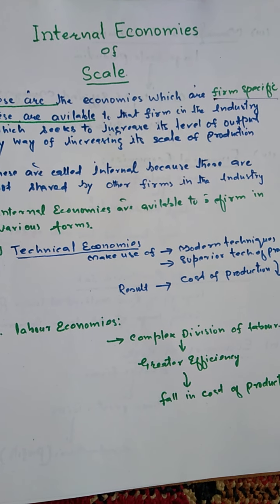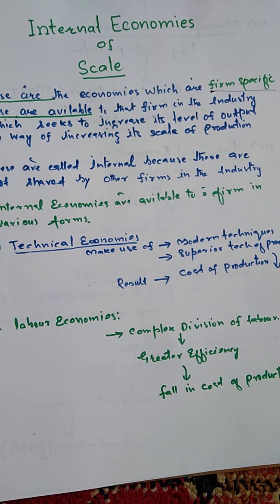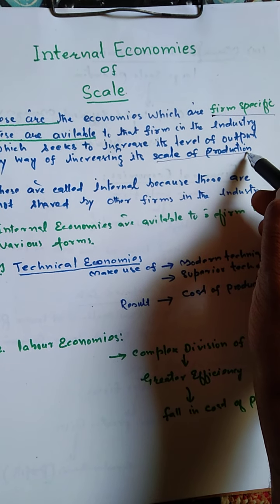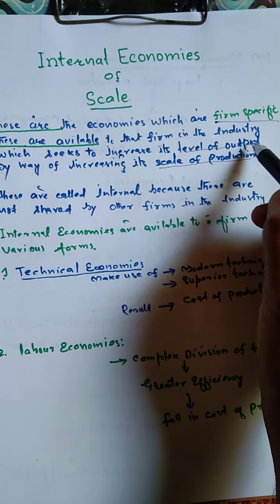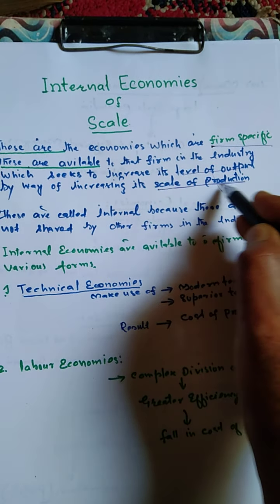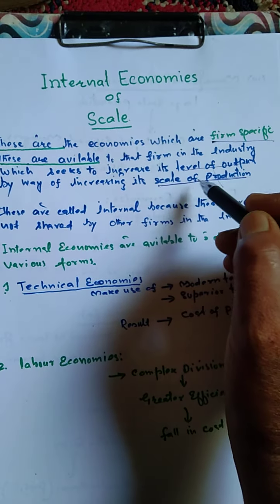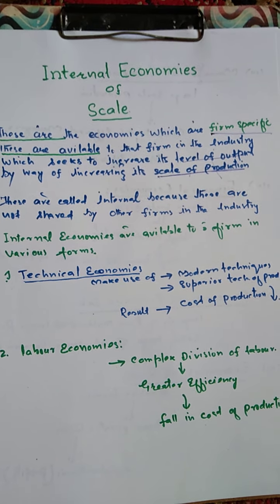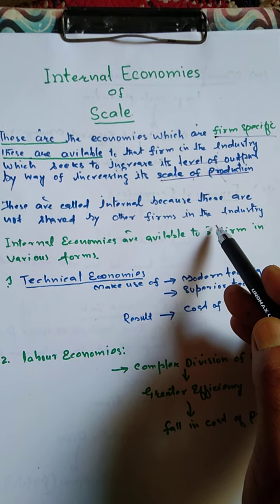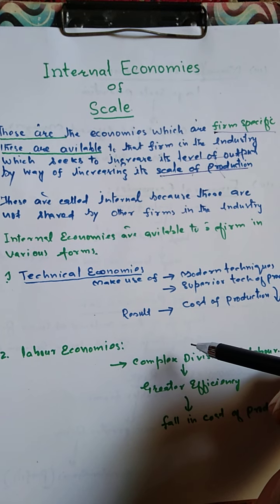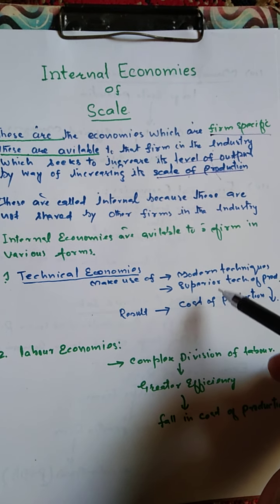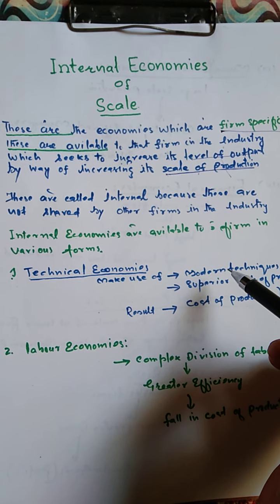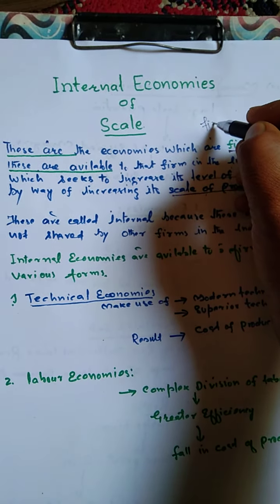These are available to that particular firm in the industry which seeks to increase its level of output by way of increasing its scale of production. Jab firm scale increase karti hai, us ka output seedha badhta hai, aur internal economies ke liye aise halaat khud ba khud paida ho jate hain.